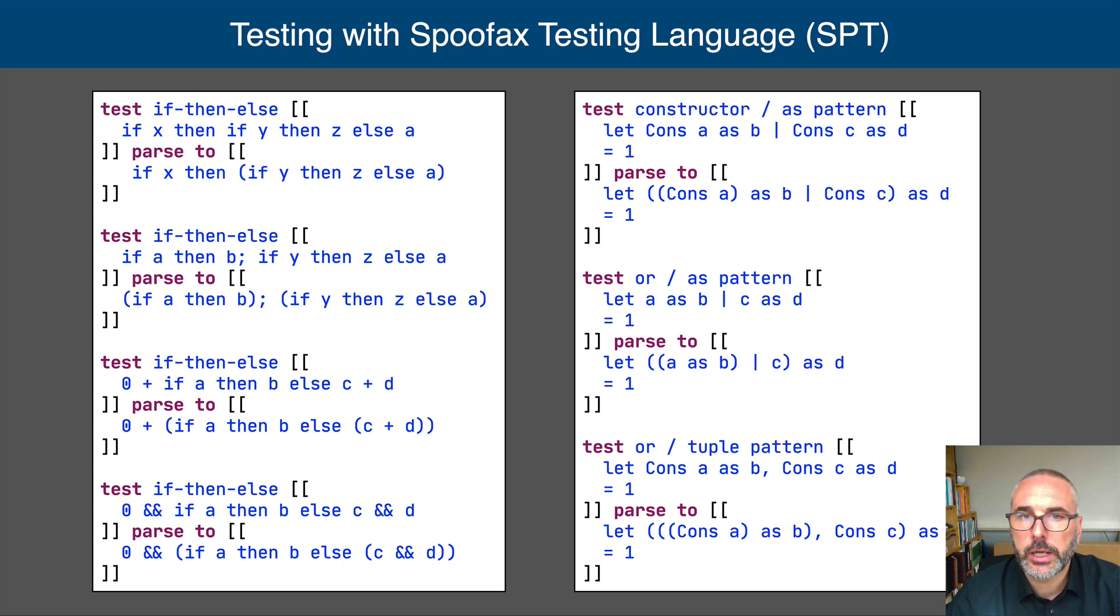For example, note the disambiguation of dangling else, deep conflicts involving if-then-else, and disambiguation of combinations of alias, or, and tuple patterns.